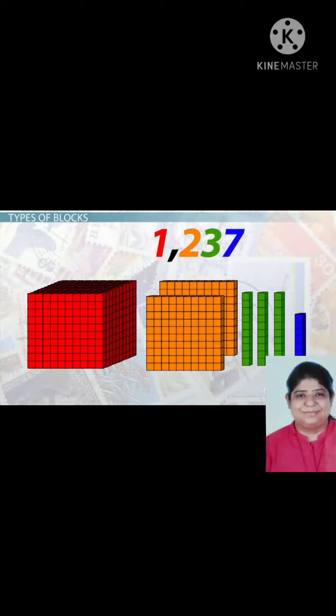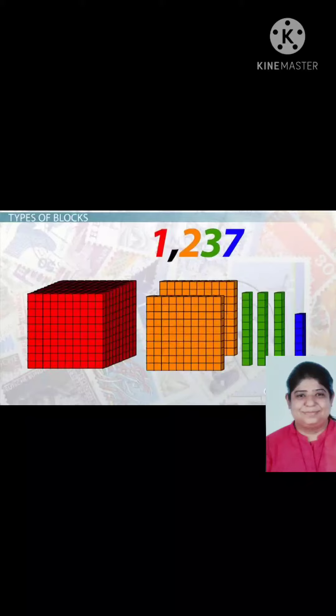In the given example, 1000 block is there, 200 block and 3 tens and 7 ones blocks are there. So what will be the answer? 1237.